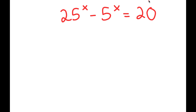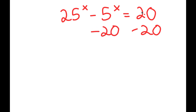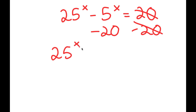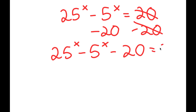So to solve this equation, I'm going to first start by subtracting 20 on both sides. So these two cancel out, and I get 25 to the power of x minus 5 to the power of x minus 20 is equal to 0.